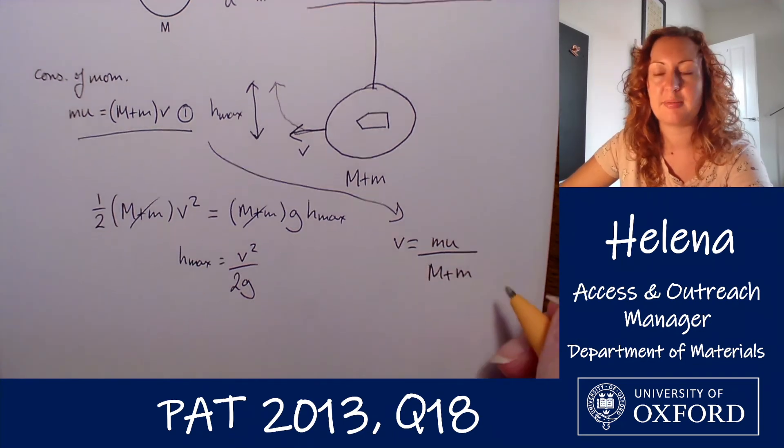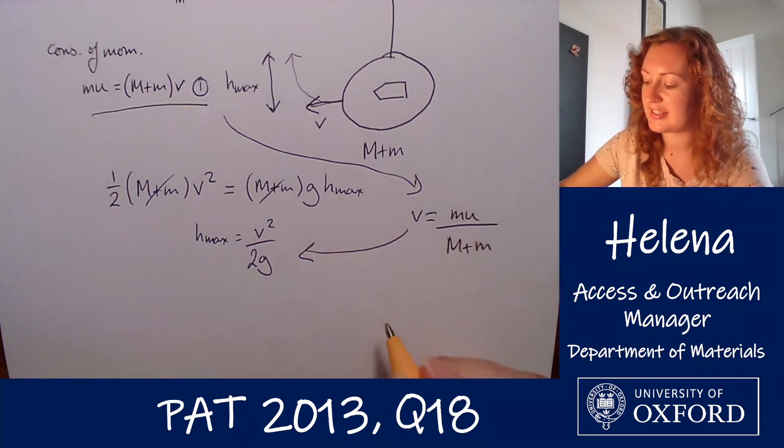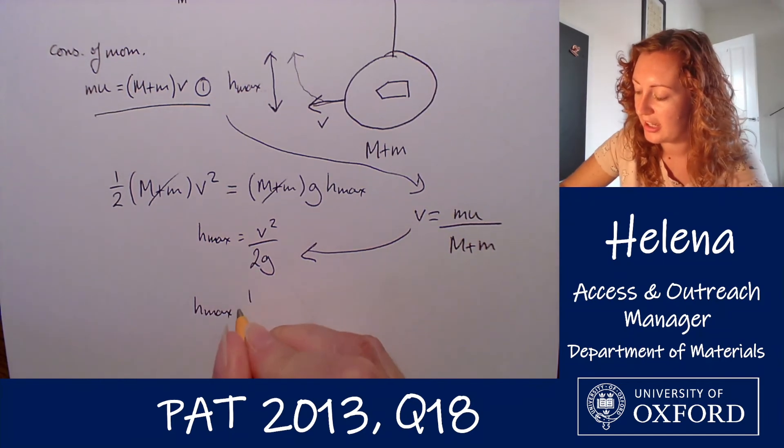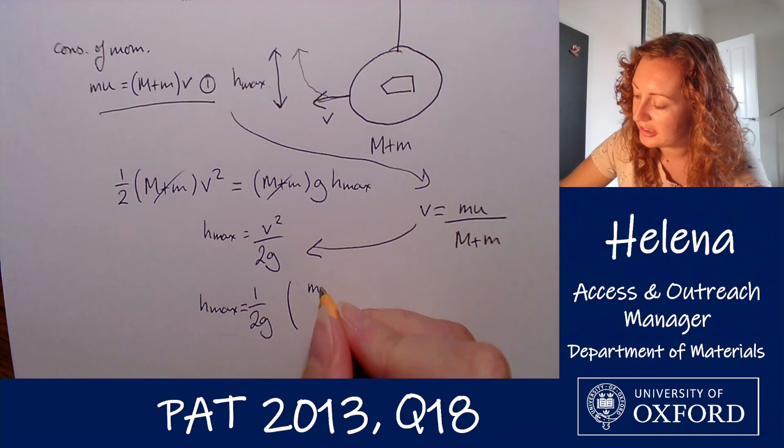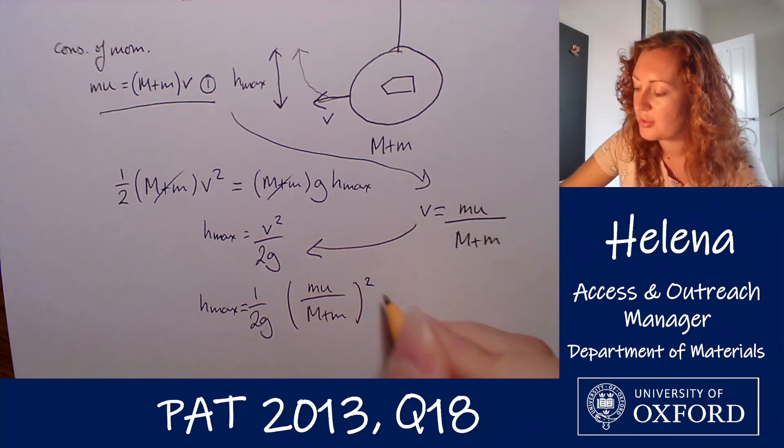And if we substitute that into our equation for h_max, we have h_max equals 1 over 2g into little m times u over big M plus little m, all squared.